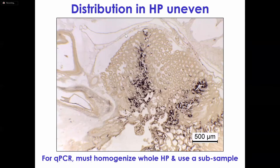Here is an in-situ hybridization image of a hepatopancreatic slice. If I took a small sample from one area and did a PCR, I would find very little or no EHP. If I took it from another area, there would be a very high level. So you can't use a small sample — you have to use the whole hepatopancreas and then take a subsample before you do the qPCR, if you want to do some kind of comparative study.